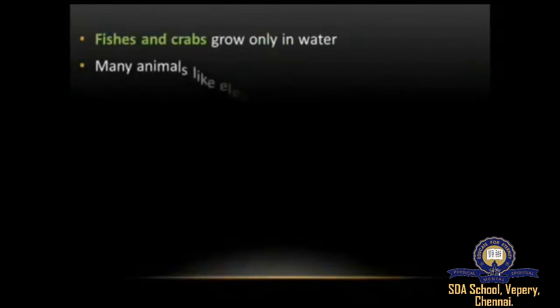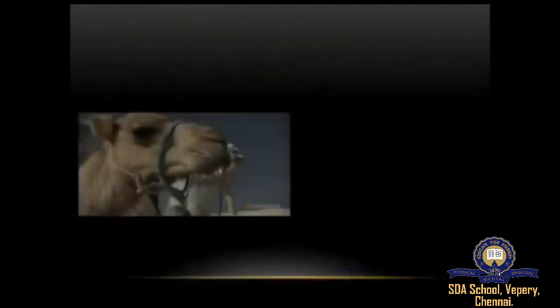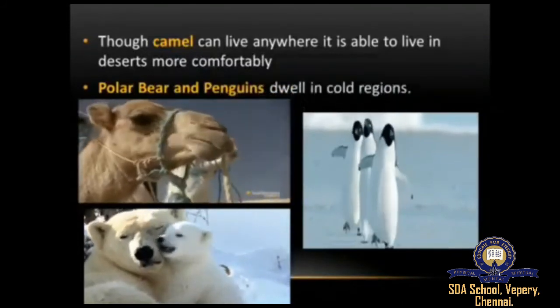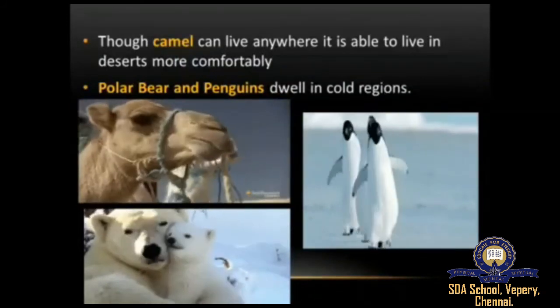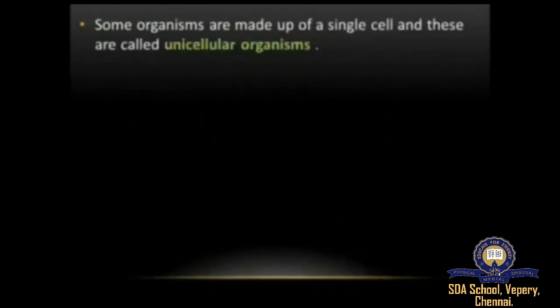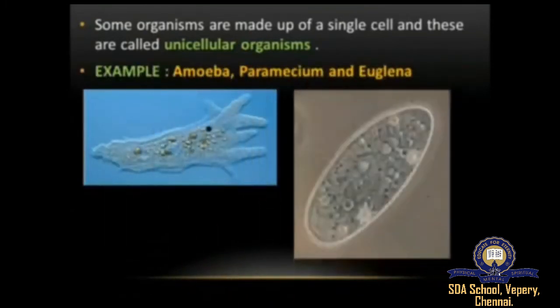Fishes and crabs grow only in water, whereas animals like elephants, tigers, and camels live on land. Camels can live anywhere but are more comfortable in deserts, and polar bears and penguins dwell in colder regions. Living things are made up of small units called cells. Organisms made up of a single cell are called unicellular organisms — examples are amoeba, paramecium, and euglena.